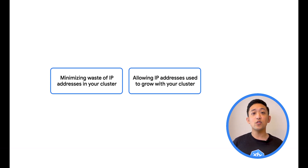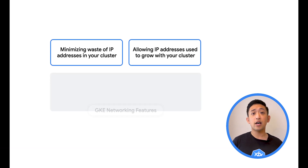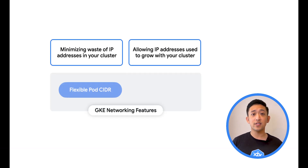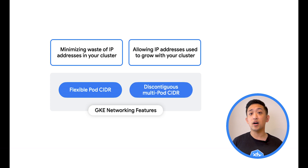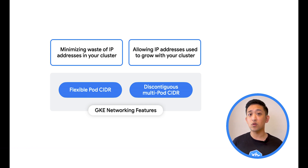GKE provides two features that can help you tackle this: Flexible PodCIDR and Discontiguous Multi-PodCIDR. Flexible PodCIDR allows you to reduce the number of IP addresses each node has to give to pods, which allows for less waste. Discontiguous Multi-PodCIDR allows you to grow the IP address space that you allocate to a cluster incrementally as you add new node pools. Each of these features can help you tackle IP address management in a large-scale GKE cluster.